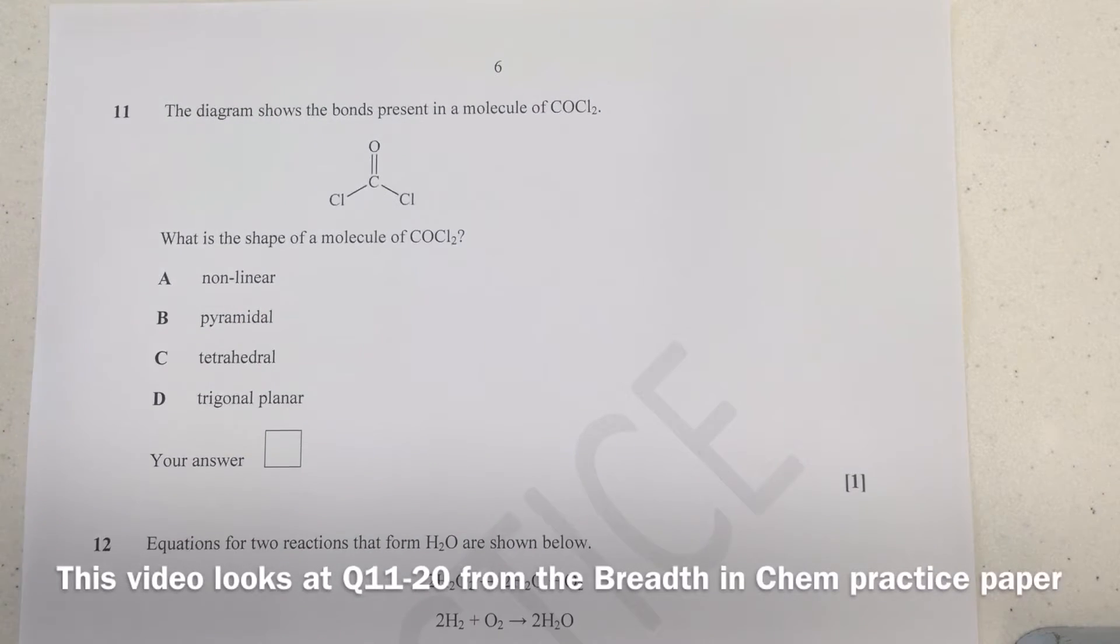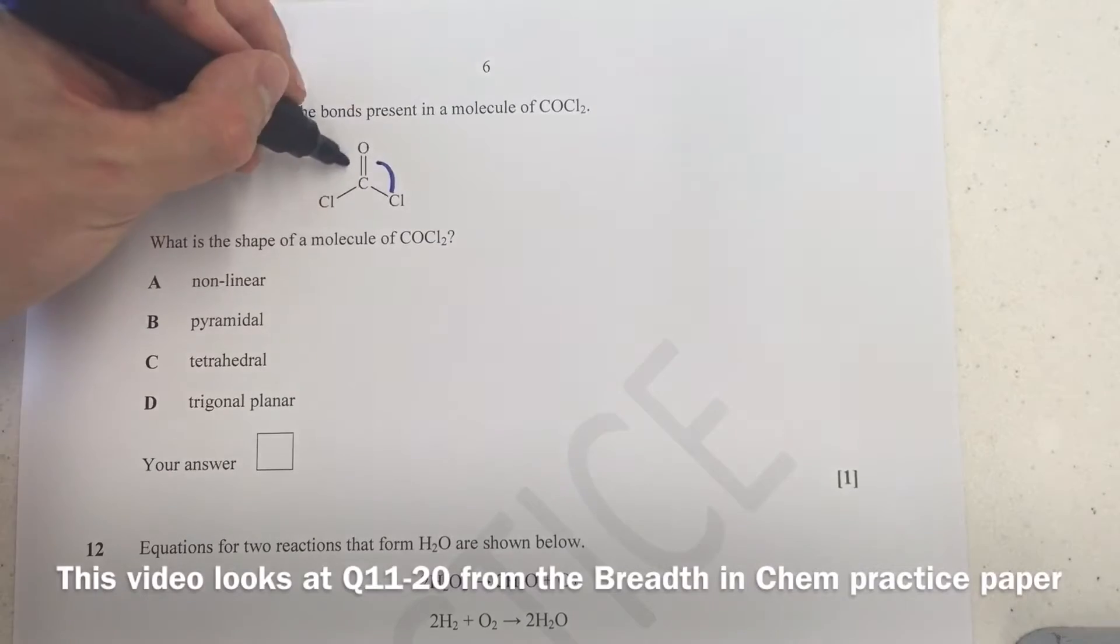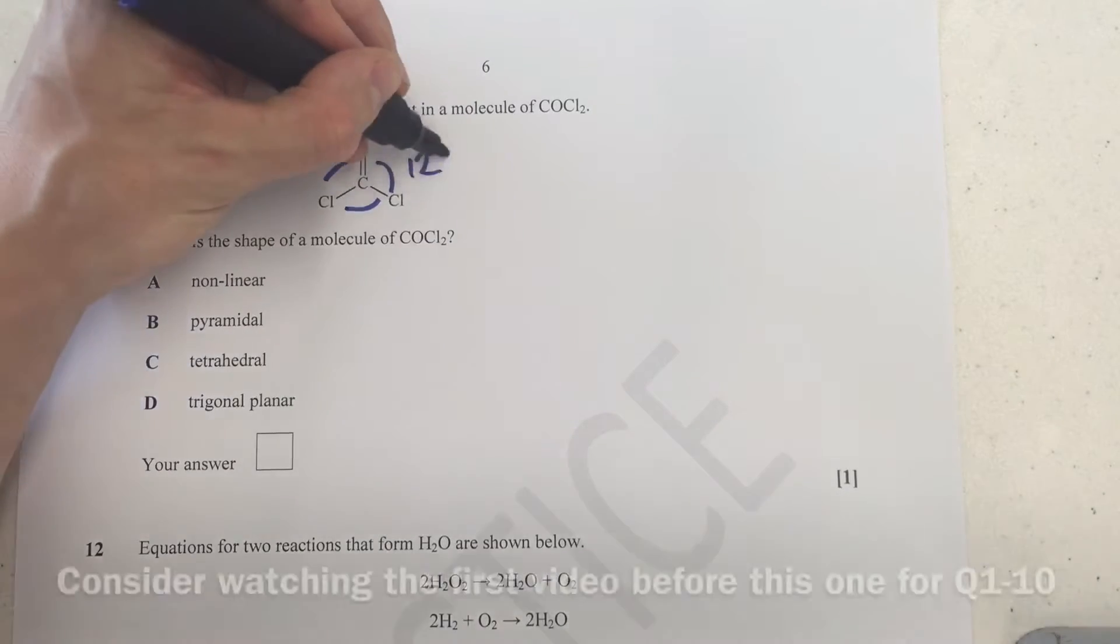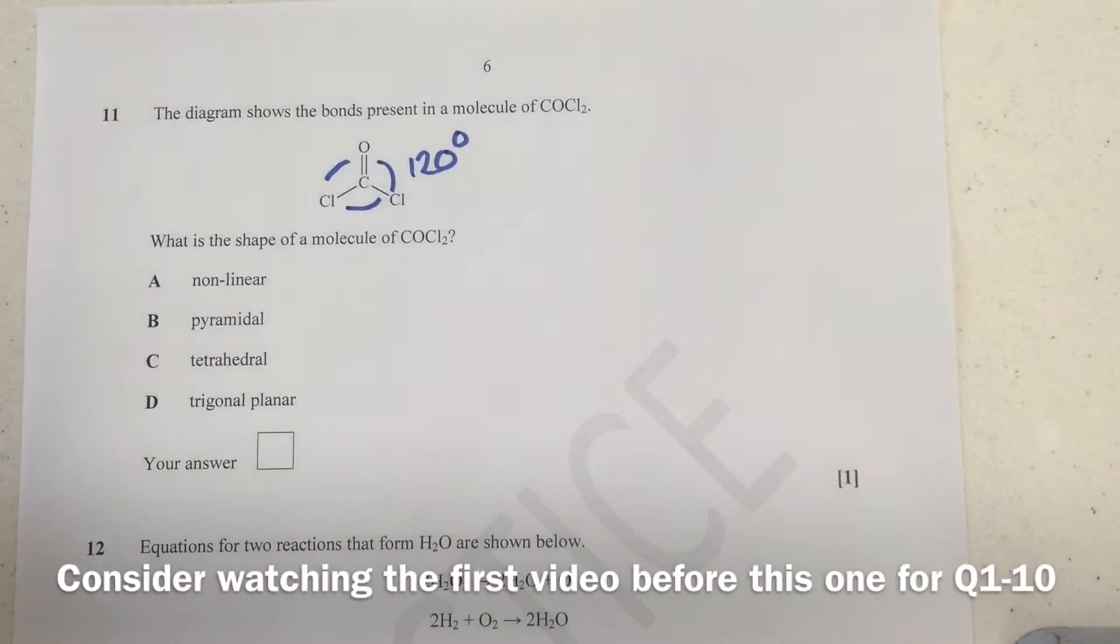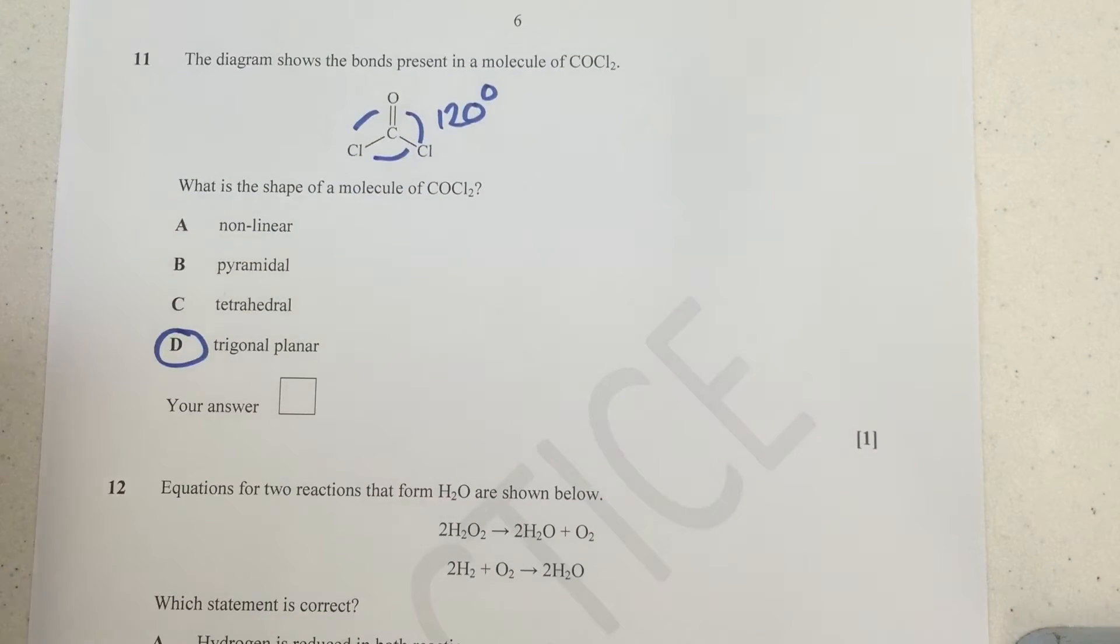So here we are at question 11. The diagram shows the bonds present in a molecule of COCl2. They've given us a really good diagram here actually, and you can see the angles all the way around appear to be 120 degrees. We've been asked to identify what the shape is, and the shape, straightforward here, is trigonal planar.